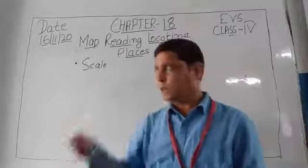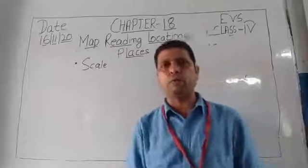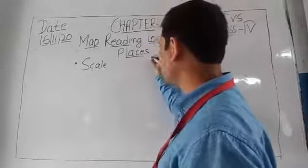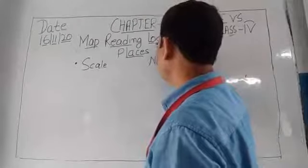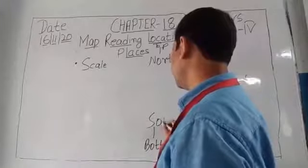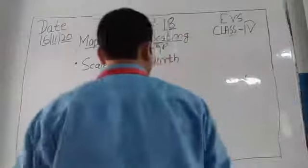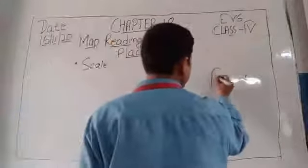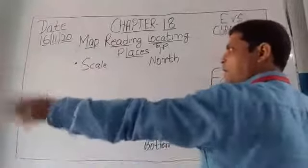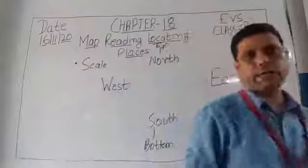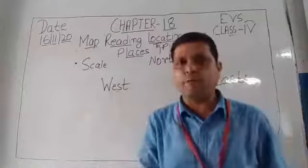Maps give the exact location of a place because directions are given in the map. In a map, the top direction is always North. Bottom is known as South direction. If I am standing this way, this is my right hand — so the direction towards the right hand is East. And this is my left hand, so the direction towards my left hand is West. With the help of these directions, the map gives the exact location of the place.